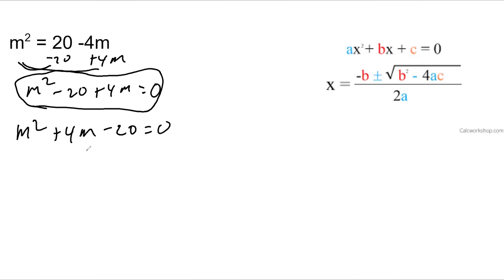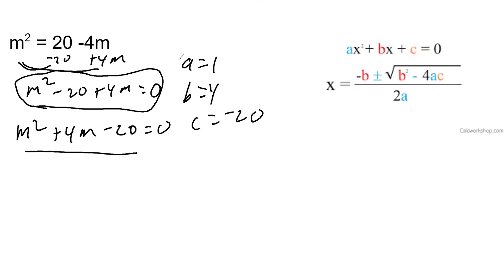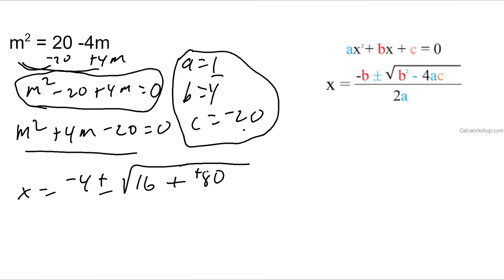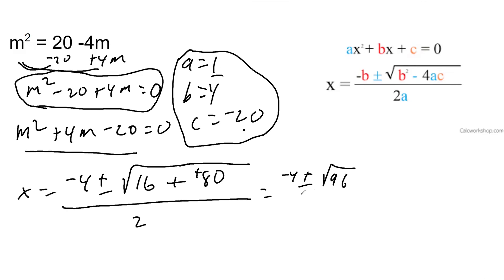Once we have it in this form, we can use the formula. a is 1, b is 4, c is negative 20. x equals negative b — negative 4 — plus or minus the square root of b squared, which is 16, minus 4ac: 4 times 1 times negative 20 is negative 80. That gives me a plus here. All over 2a, which is 2. So this gives me negative 4 plus or minus the square root of 96 over 2.